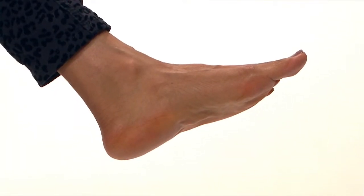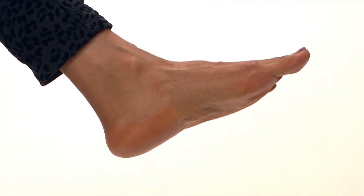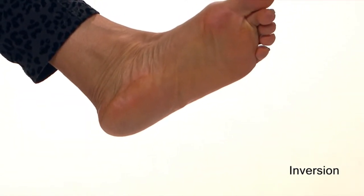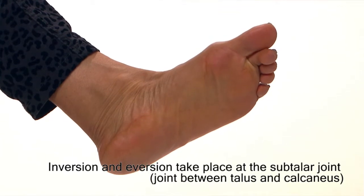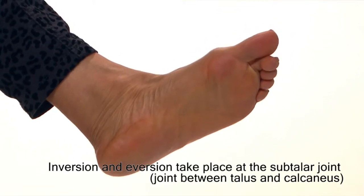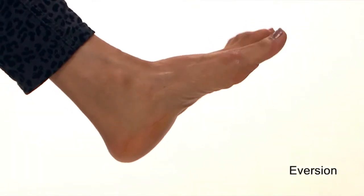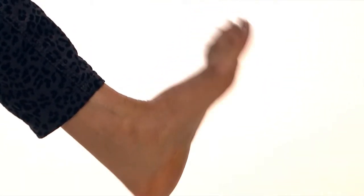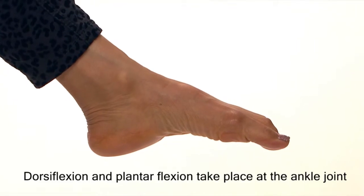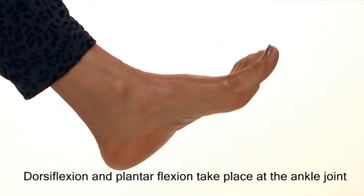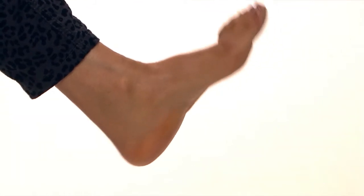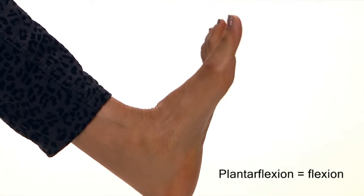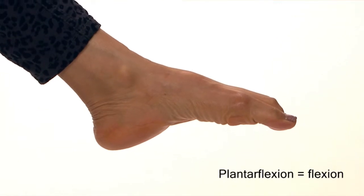Inversion and eversion are limited to the feet. In inversion, you turn the foot so that the sole faces inwards. These movements take place at the subtalar joints. In eversion, the sole of the foot faces outwards. Dorsiflexion and plantar flexion are also limited to the feet and take place at the ankle joint. Dorsiflexion of the foot corresponds to extension of the wrist, while plantar flexion corresponds to flexion.